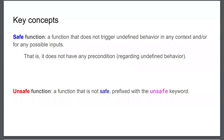A safe function cannot have any precondition about, for example, the validity of pointers. An unsafe function, on the contrary, has a safety precondition — you can say to the caller that the pointer being passed must be valid. This is essentially what we do in C all the time: virtually every function that takes a pointer has an implicit precondition that the pointer is valid, even if we don't write it explicitly.